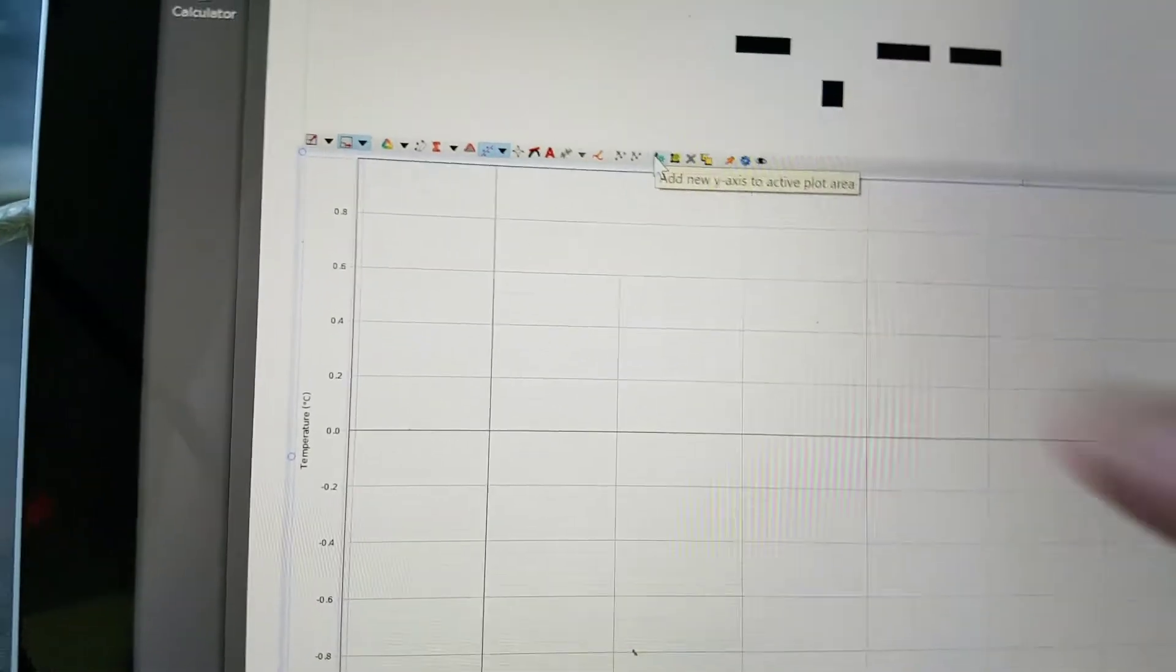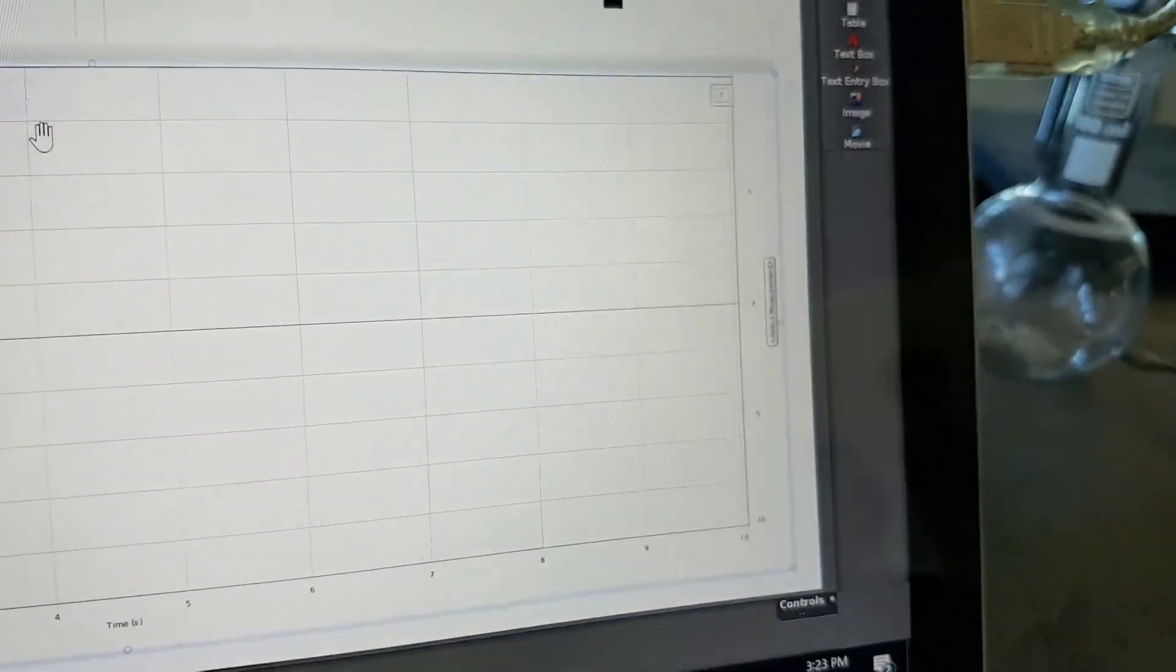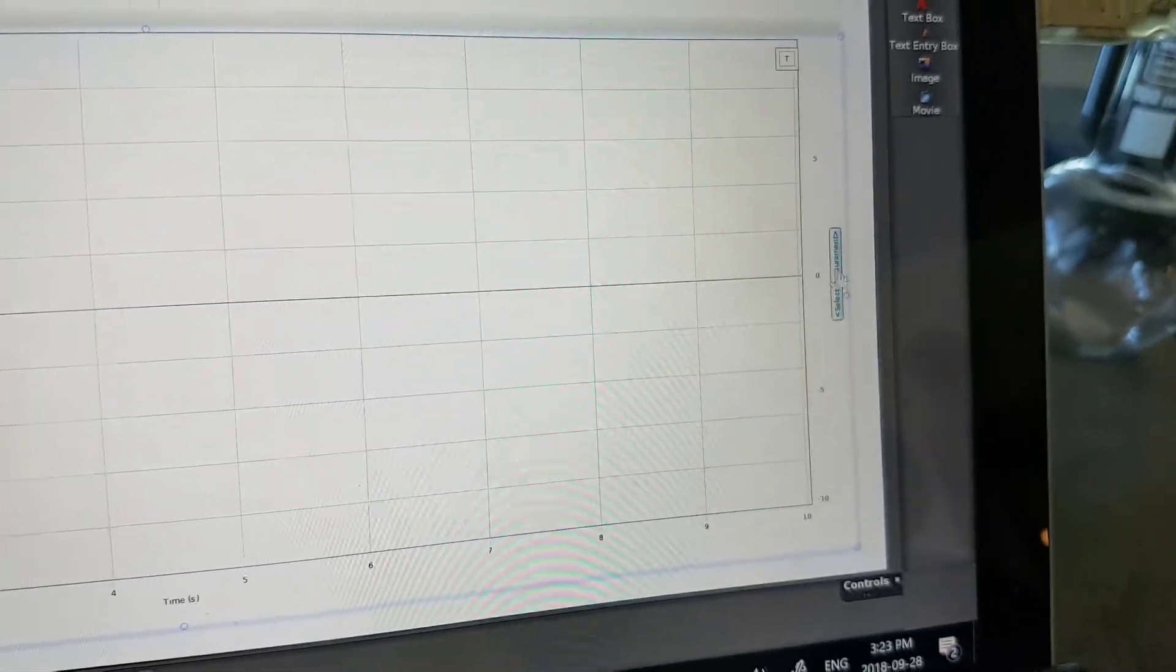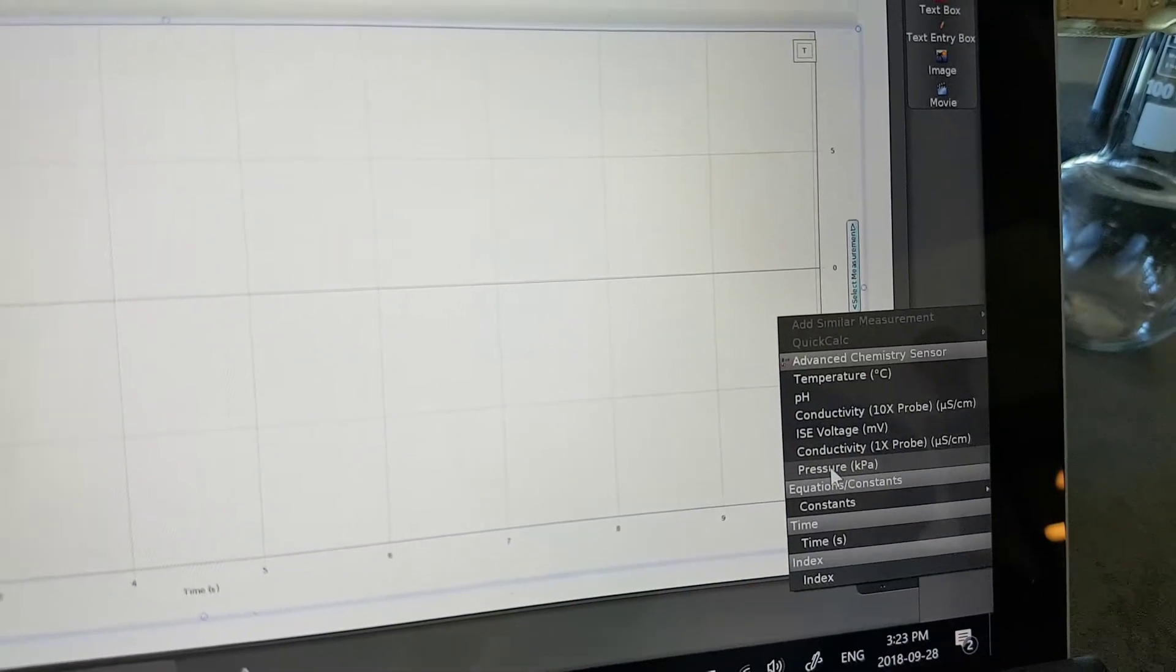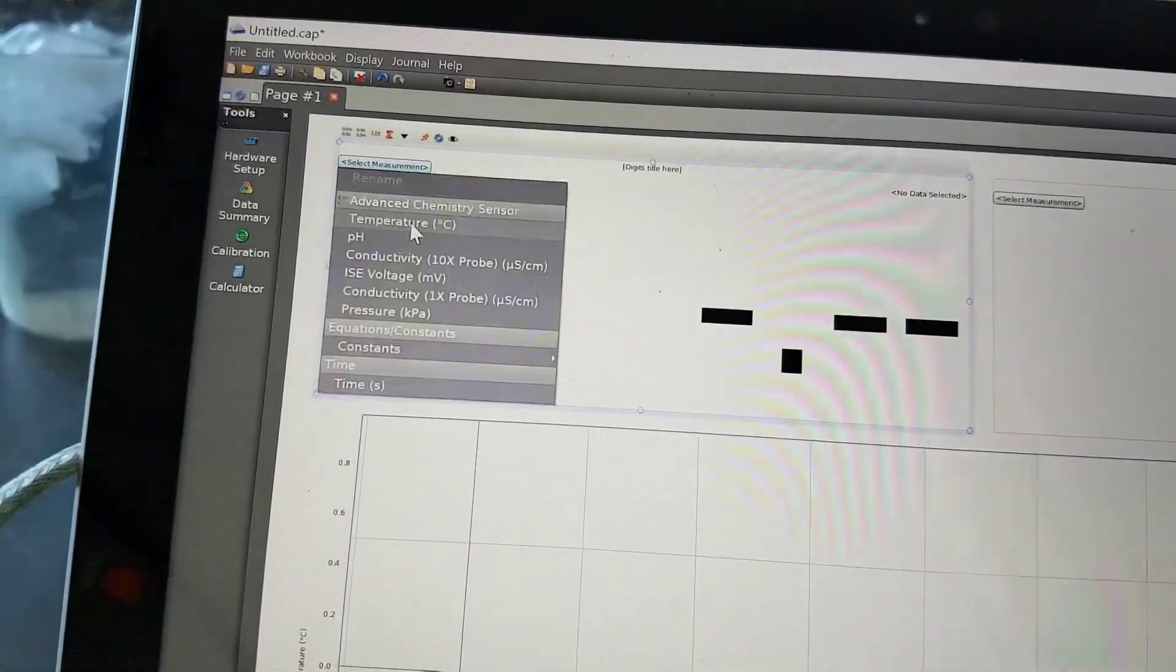Here I put it on temperature on one side, and you're going to need to add another axis at the top, which is called add the Y-axis graph. On the side there, you click on the side, and you can go click on pressure so you can monitor the pressure sensor once you collect the data.